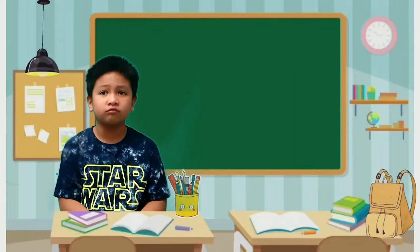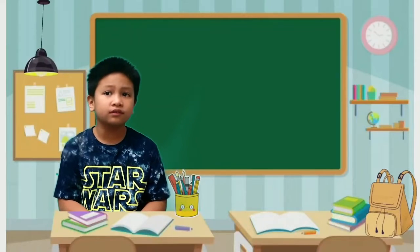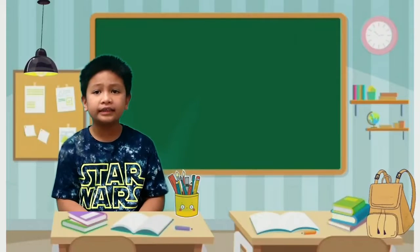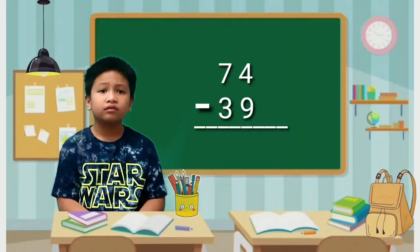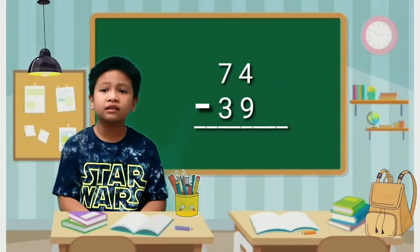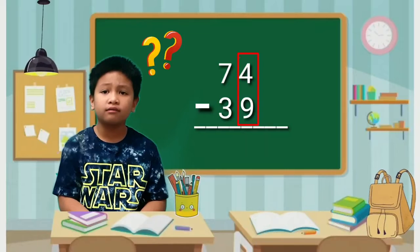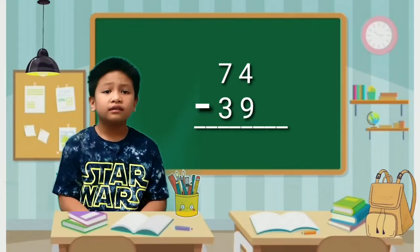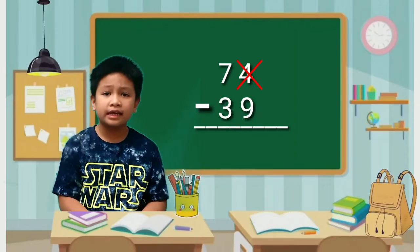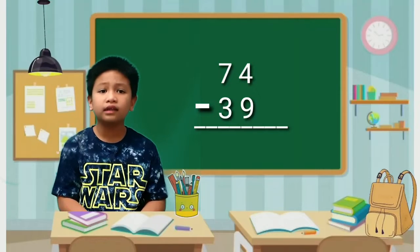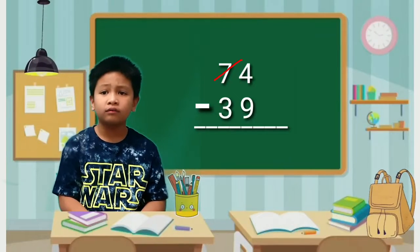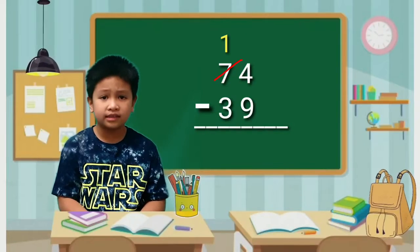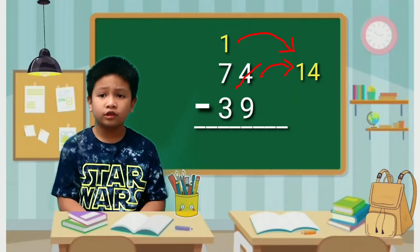How is subtraction with regrouping performed? The first thing to do is to write the minuend and the subtrahend in a column. Make sure to align the digits according to their place values. Subtract the digits in the 1s place first. Can we take away 9 ones from 4 ones? 4 is less than 9. To subtract 9 from 4, we need to regroup or borrow 1 ten from 7 tens. 4 ones will become 14 ones.